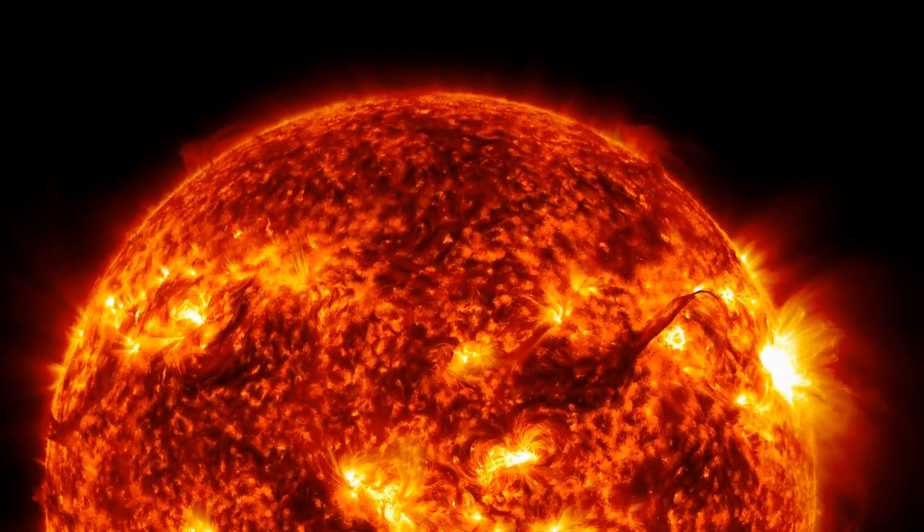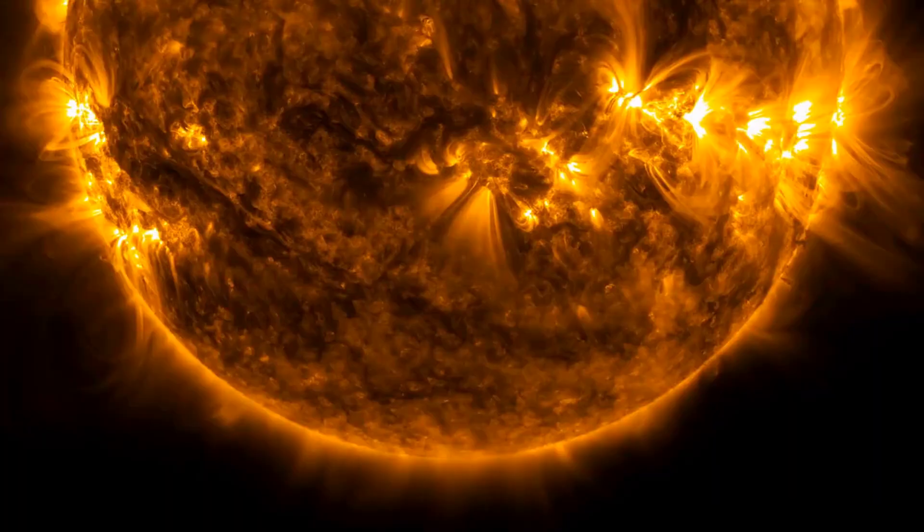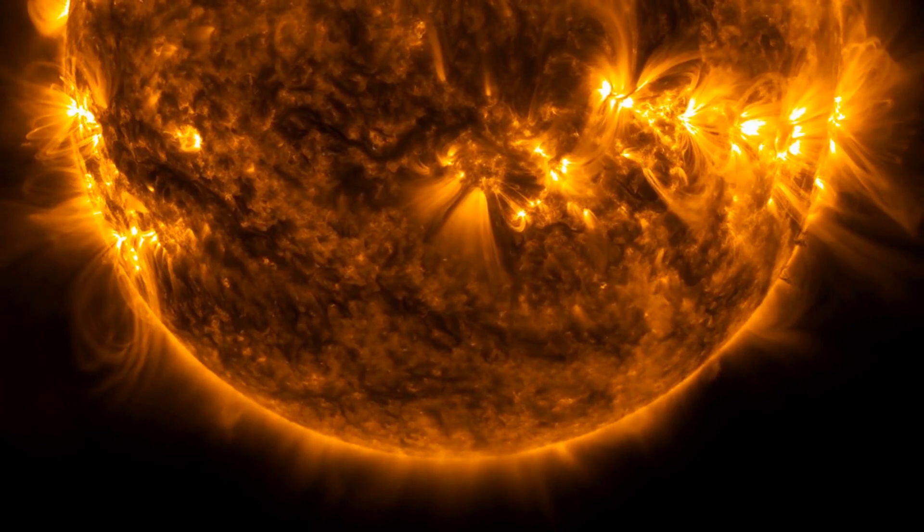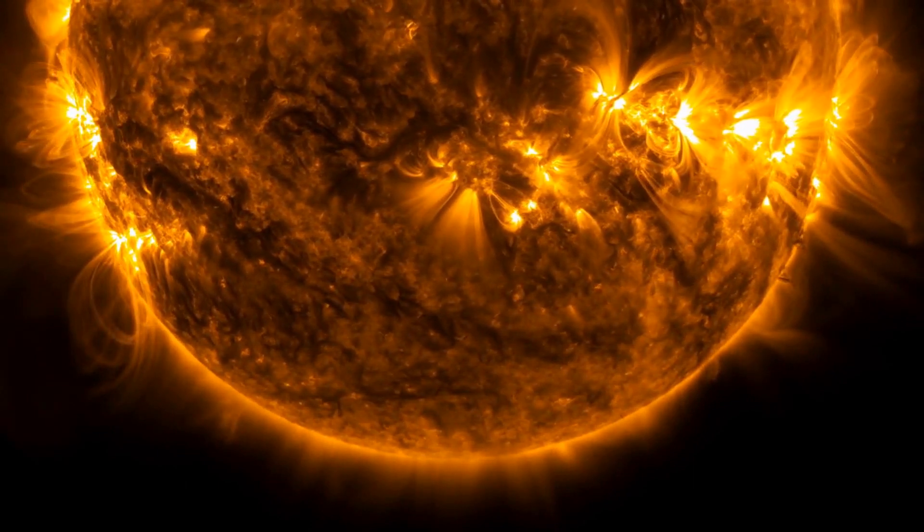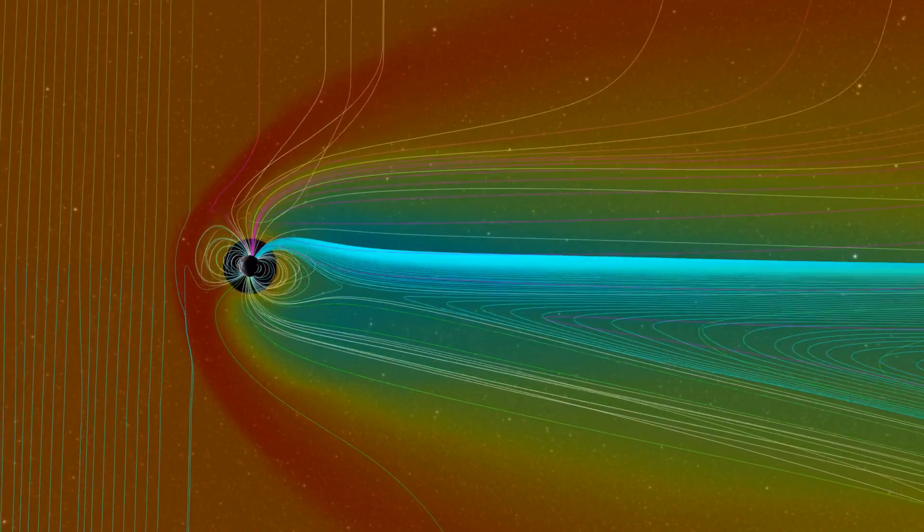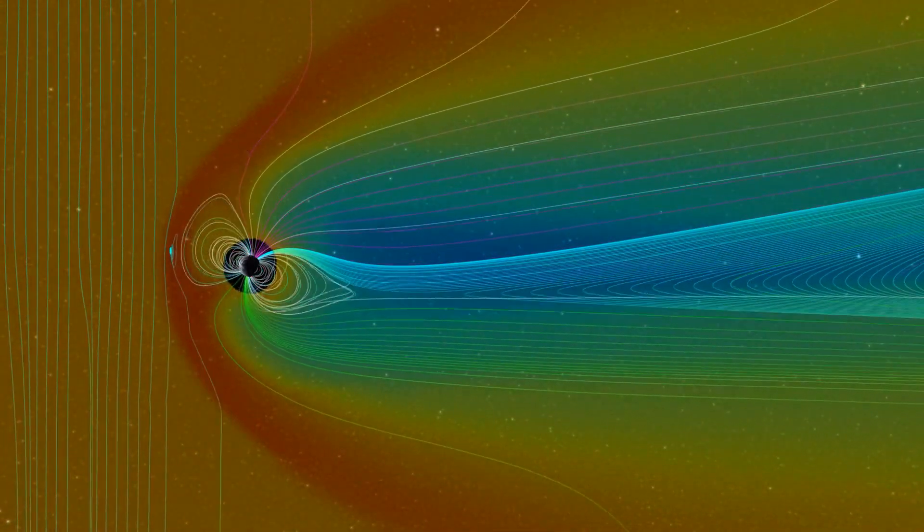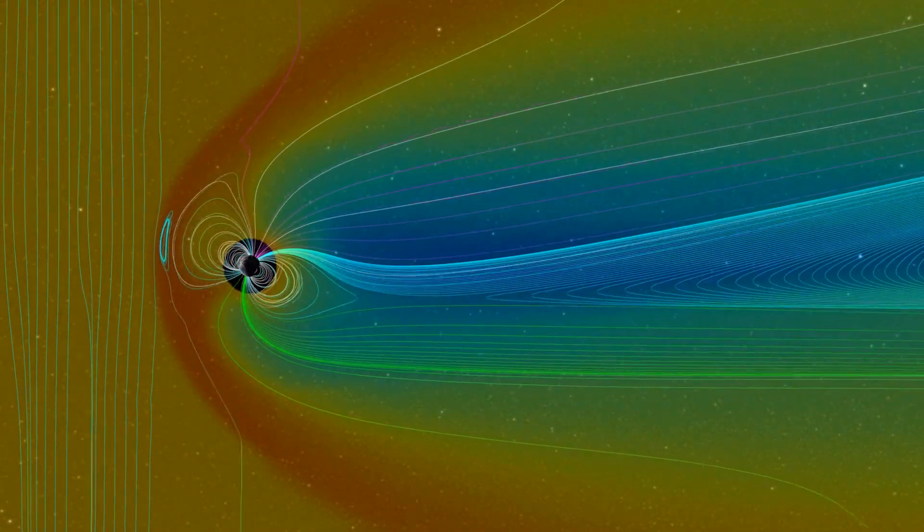Solar flares are intense bursts of energy that originate from the Sun's magnetic field. They are caused by the release of magnetic energy that has built up in the Sun's atmosphere. When this energy is released, it creates a burst of radiation across the electromagnetic spectrum, including X-rays and extreme ultraviolet light.